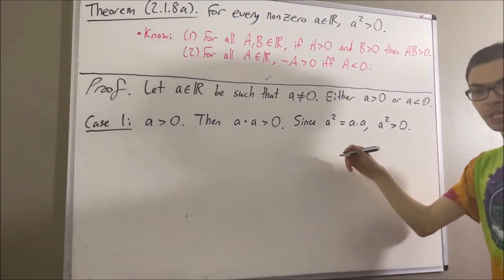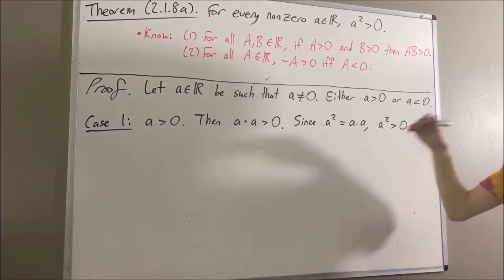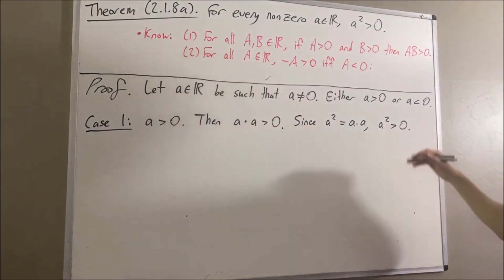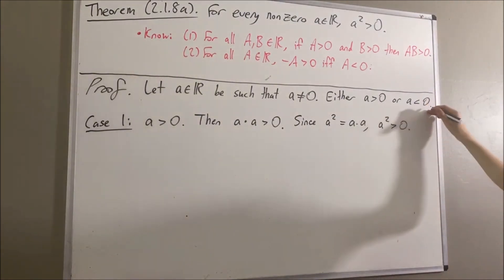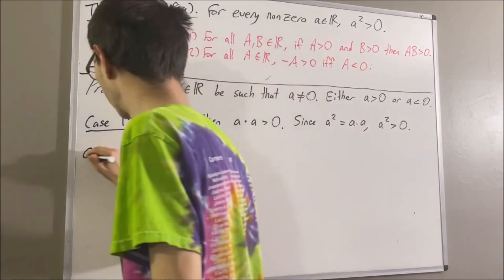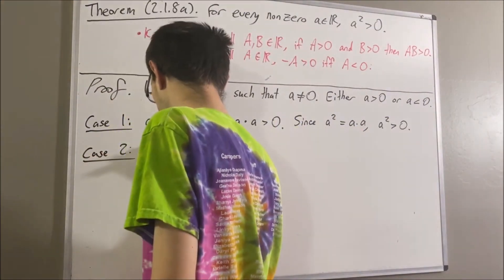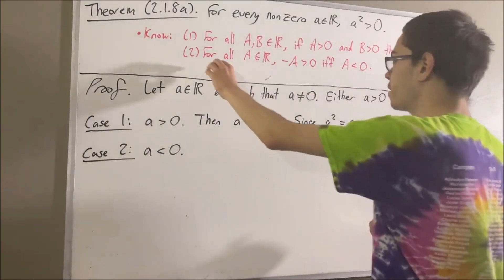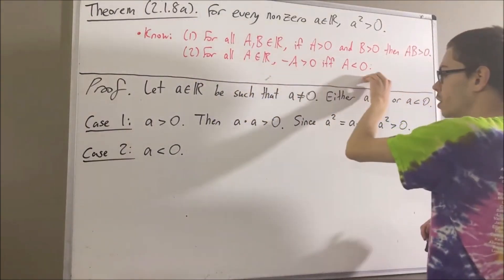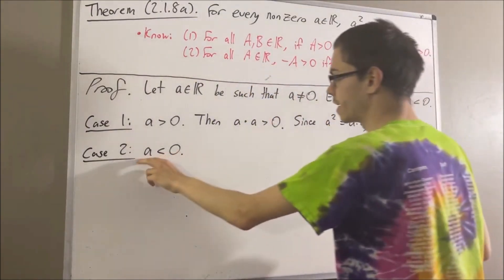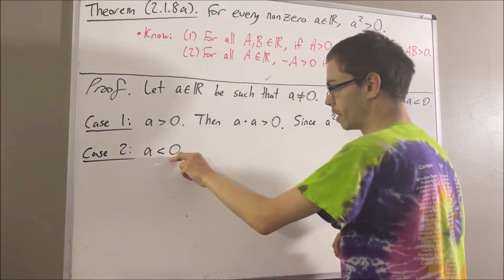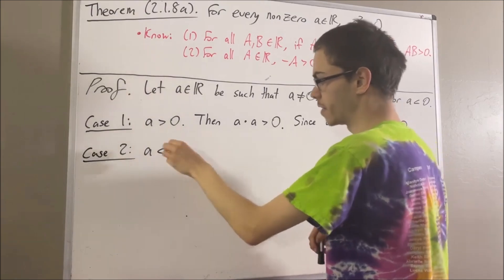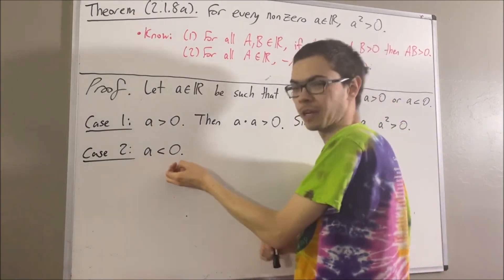That completes case one. Now let's move on to case two where a is less than zero. Applying fact number two, since a is less than zero, this means that negative a is greater than zero.